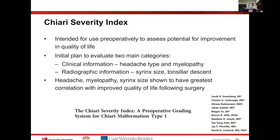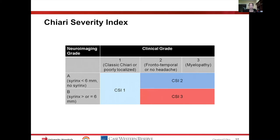They wanted to evaluate two main categories: clinical information — predominantly headache and myelopathy — and radiographic information, specifically the level of tonsillar descent and the size of the syrinx. When they analyzed all of this, headache, myelopathy, and syrinx size had the greatest correlation with quality of life following surgery.